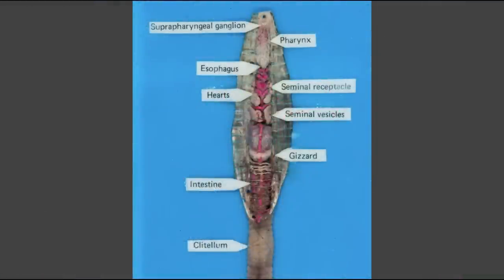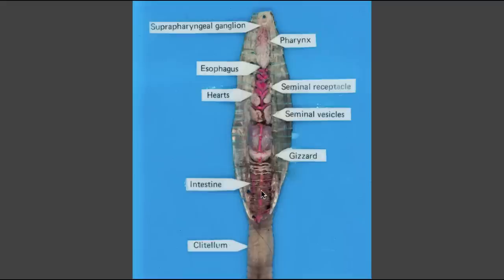Now let's look at a prepared earthworm dissection, several of which are available in the laboratory. At the top, these two small white structures are the suprapharyngeal ganglia — note the label pointer is a bit out of place. These red structures are the hearts. The small white structures on the right are the seminal receptacles, and these larger, somewhat darker structures are the seminal vesicles. The pharynx is clearly visible, but the esophagus is mostly obscured by the hearts and reproductive organs. The gizzard and intestine are labeled, but the crop was left out — let's remedy that.